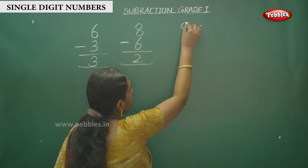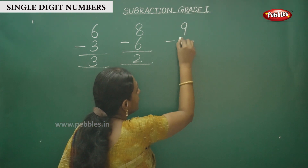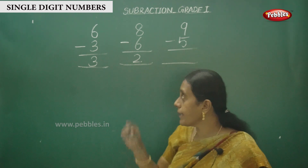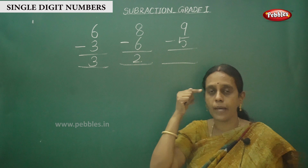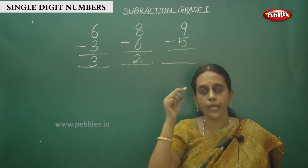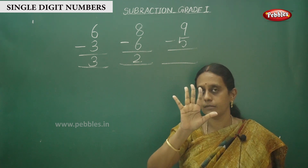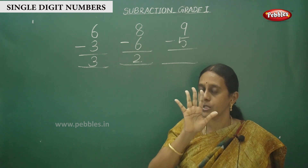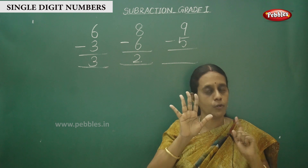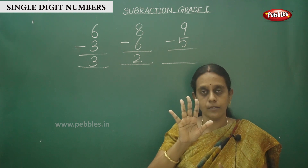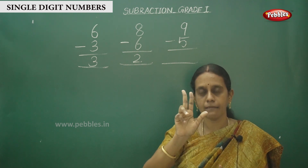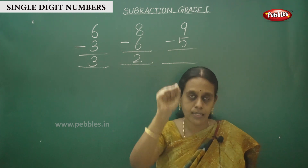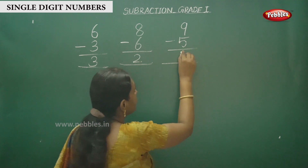One more sum for you. 9 in the mind — keep the first number in your mind. 9 in the mind, 5 in the finger. And what do you say? Before number. Before 9 — what is before 9? 8. So count: 8, 7, 6, 5, 4. Your answer is 4.